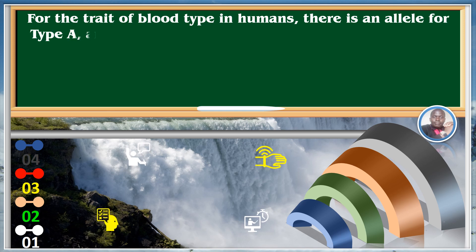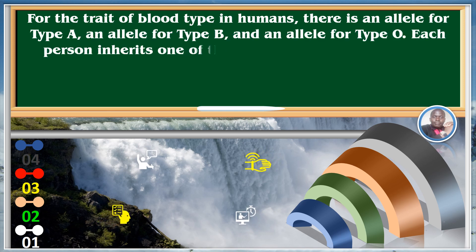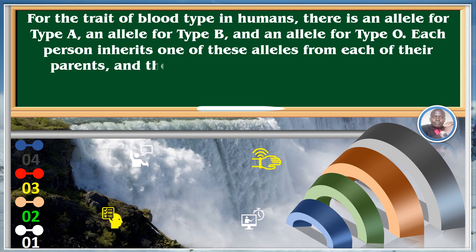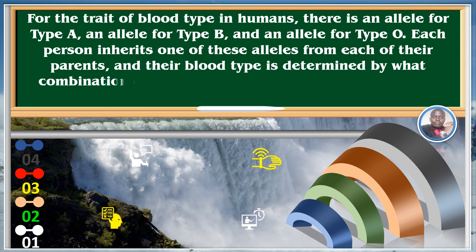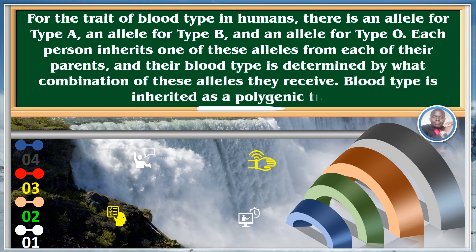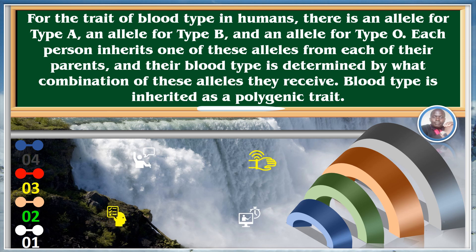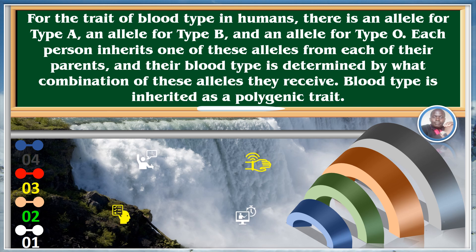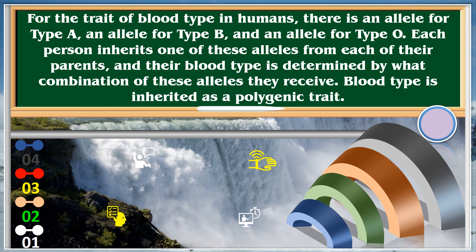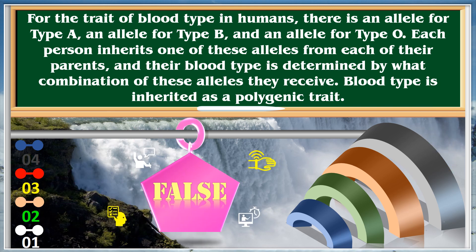For the trait of blood type in humans, there is an allele for type A, an allele for type B, and an allele for type O. Each person inherits one of these alleles from each of their parents, and their blood type is determined by what combination of these alleles they receive. Blood type is inherited as a polygenic trait. False.